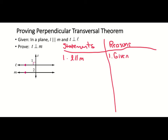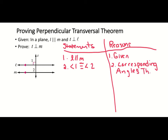From that first given — l is parallel to m — angles 1 and 2 are marked on the diagram. Because the lines are parallel, angle 1 is congruent to angle 2 by the corresponding angles theorem converse. Since angles 1 and 2 are in the same position relative to the transversal, they're corresponding angles and therefore congruent.